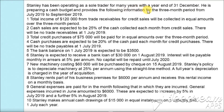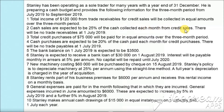The following information is provided for the three-month period from July to September 2019. The total income of $103,000 from trade receivables for credit sales will be collected in equal amounts over the three months. Cash sales are expected to be twenty-five percent of the cash collected each month from credit sales. There will be no trade receivables at 1st July 2019.